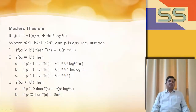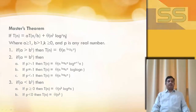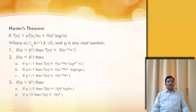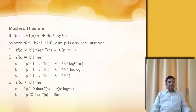This is the formula for Master's Theorem, which says if T(n) is in this form: T(n) = a·T(n/b) + Θ(n^k · log^p(n)), where a ≥ 1, b > 1, k ≥ 0, and p is any real number. If a is greater than b to the power k, then the complexity of T(n) will be Θ(n^(log base b of a)).